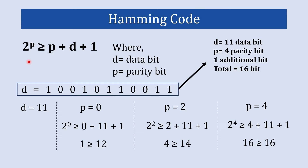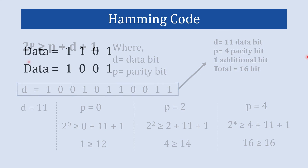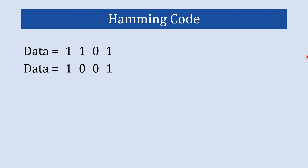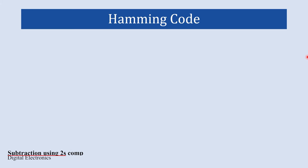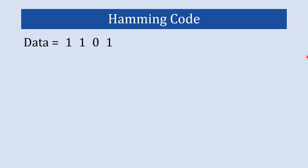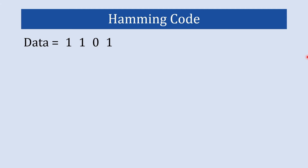So the concept about the length of Hamming code should be clear now. Let's now work with two 4-bit data examples to understand the entire process of forming Hamming code and detecting errors. The first step of generating Hamming code is to find the total length of the Hamming code using the same equation.